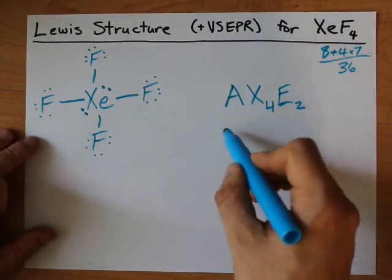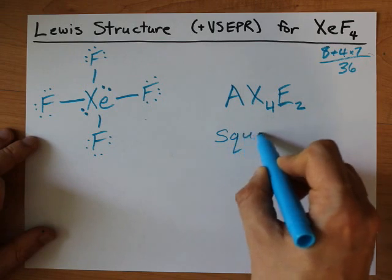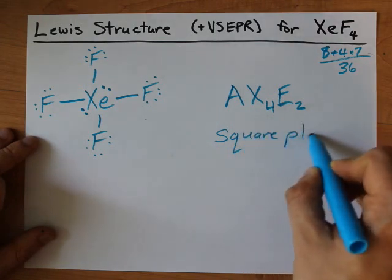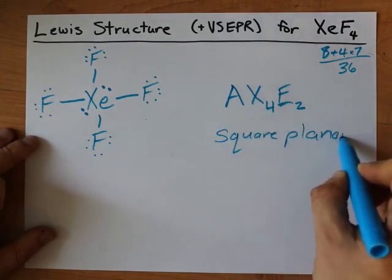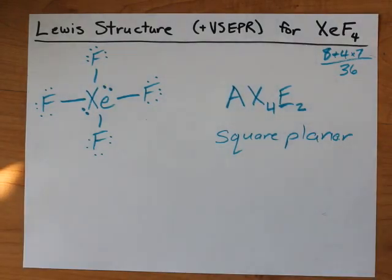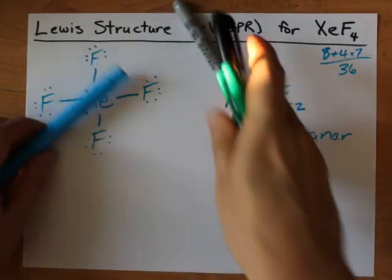This is the shape, or corresponds to a shape called square planar, which is flat and square. There. I could arrange it with my markers here.